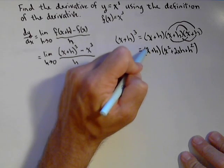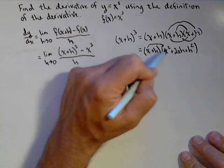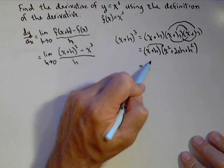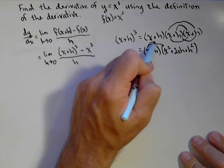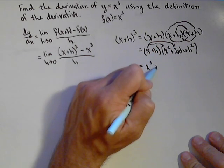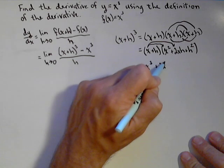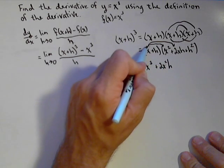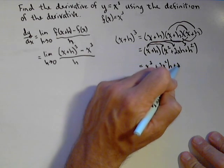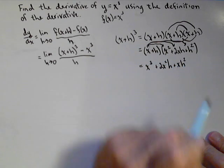Now, let's distribute this x. x times x squared is x cubed. x times this middle piece gives us plus two x squared h. And then x times this last part gives us a positive xh squared.